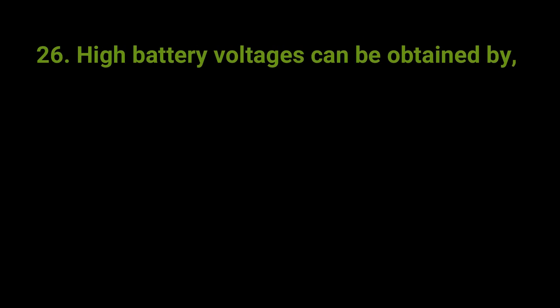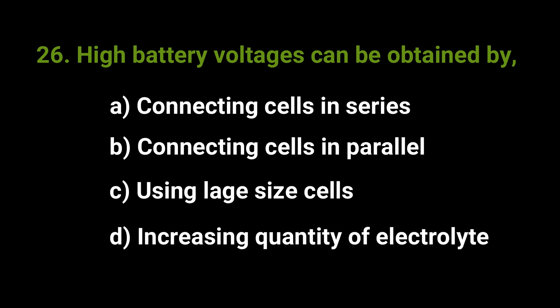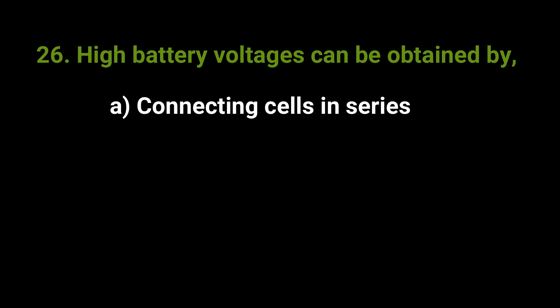High battery voltages can be obtained by. The answer is A. Connecting cells in series.